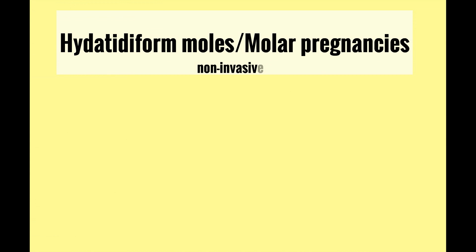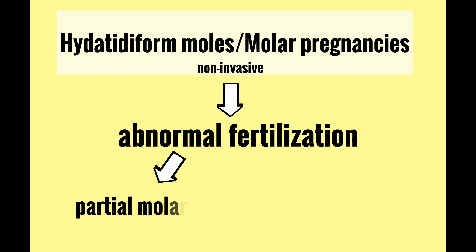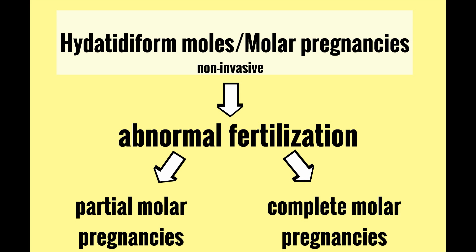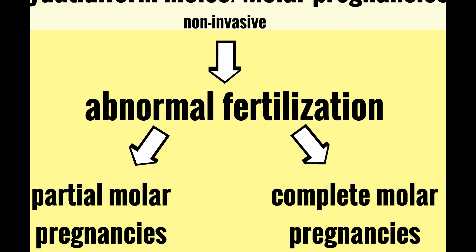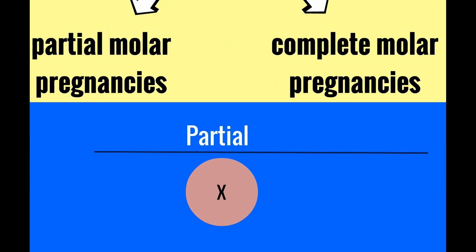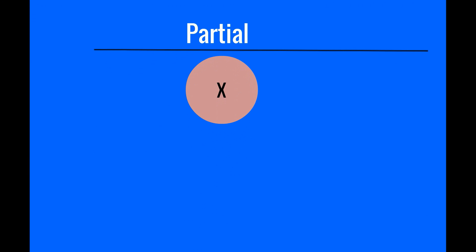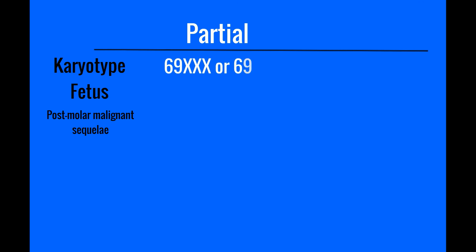Hydatidiform moles, otherwise known as molar pregnancies, are non-invasive, localized tumors that result from abnormal fertilization events that result in proliferation of trophoblastic tissues. They are classified as partial or complete molar pregnancies. In a partial molar pregnancy, a haploid ovum is fertilized by two sperm, resulting in a triploid karyotype of 69XXX or 69XXY. There is often a fetus present that is small for gestational age and usually dies in utero. These rarely go on to become malignant.